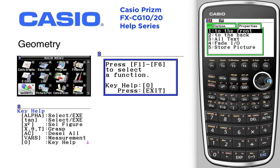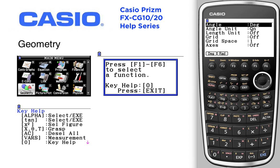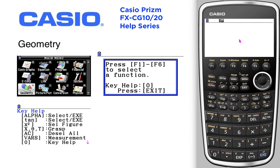So we'll go ahead and hit exit and we're right back to where we started. If we press setup, we can take a look at the setup: angles, units, whether or not the grid and axes are shown. All the setup options are there, so we can exit there.